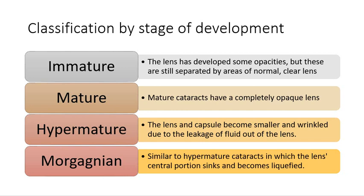Apart from etiology, cataracts can also be classified by their stage of development. The classification can be immature, mature, hypermature, or Morganian. An immature cataract is where the lens has developed some opacities but these are still separated by areas of normal, clear lens. A mature cataract has a completely opaque lens. A hypermature cataract is when the lens and capsule become smaller and wrinkled due to leakage of fluid out of the lens. A Morganian cataract is similar to hypermature but the lens's central portion sinks and becomes liquified.